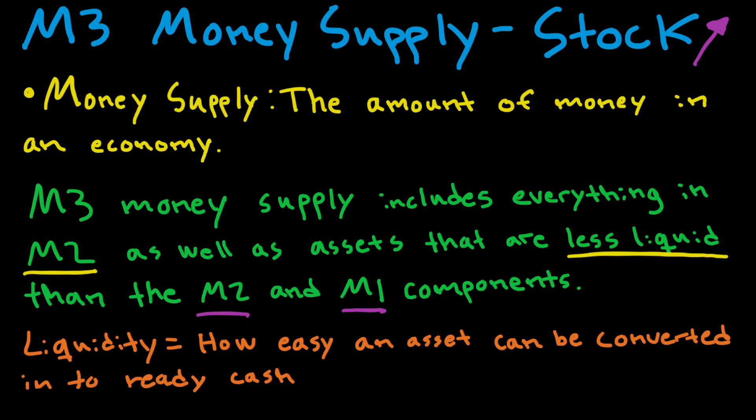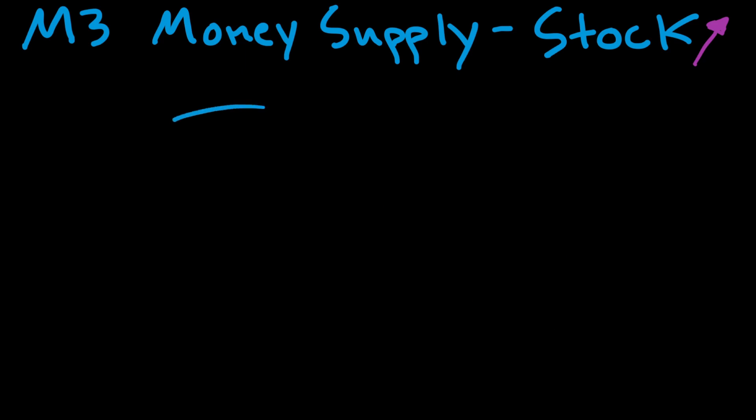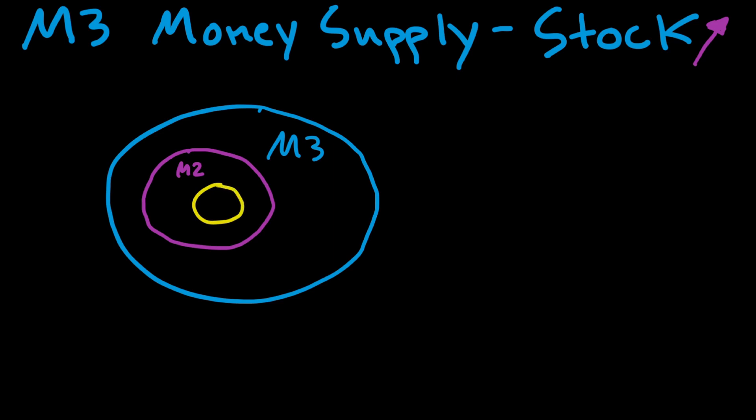All right, so if this whole circle right here is the M3 money supply, then the M2 money supply—this purple circle right here—is a part of M3. And M1 is a part of M2. So M3 includes both M2 and M1, and M2 includes M1.